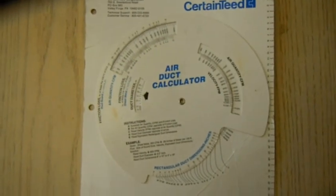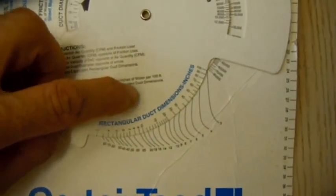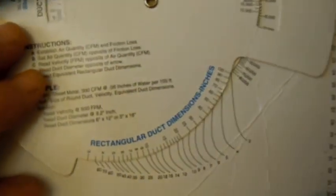One of the handier things that a ductulator can do is it can calculate the rectangular duct dimensions to round duct dimensions.